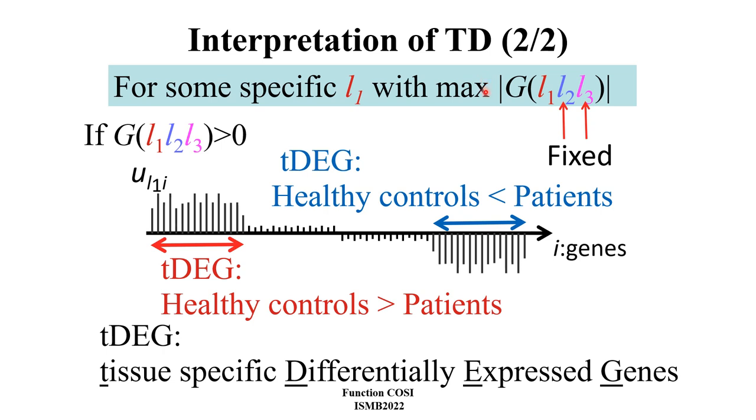Next, finally, we can identify the DEG by finding the L1 that maximizes the core tensor G from the identified L2 and L3. This is because the larger the value of the core tensor, the larger the contribution to original tensor.